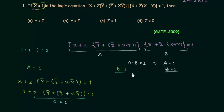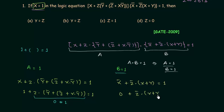Now we move to the second condition: B is equal to 1. B is x complement OR z complement AND x OR y, which equals 1. Since x is 1, x complement is 0. So we get 0 OR z complement AND x OR y equal to 1. This implies z complement is equal to 1 AND x OR y is equal to 1. Z complement equals 1 means z is equal to 0.